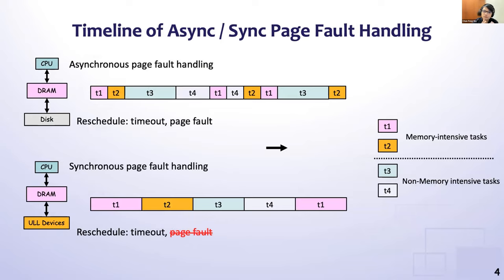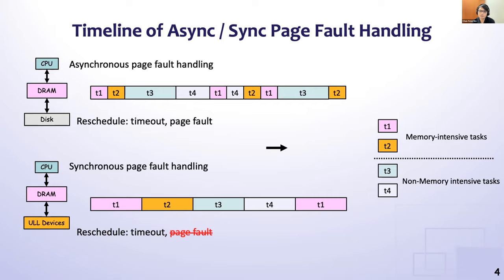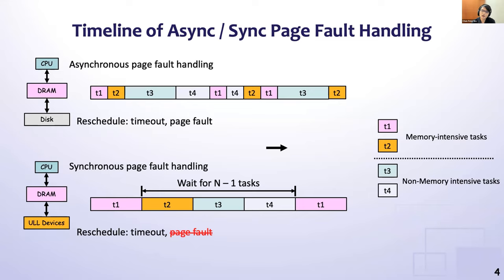Switching from asynchronous to synchronous page fault handling not only affects how IO is handled, but also how process scheduling works. For systems using asynchronous page fault handling, a process will be rescheduled when it runs out of its time slice or handles a page fault. For systems using synchronous page fault handling, a process is only rescheduled when it runs out of its time slice. In this example, memory-intensive task T1 will be scheduled to run again only after running other n minus one tasks.